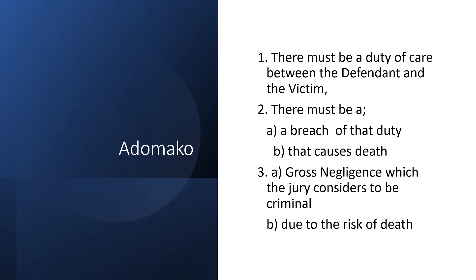Adomako set out the elements of gross negligence manslaughter. There must be a duty of care between the defendant and victim, a breach of that duty, and that breach must cause death. The first three elements are essentially normal negligence, except that the causation element involves death. The difference between gross negligence manslaughter and civil negligence lies in two additional elements: the negligence must be gross, and there must be a risk of death.